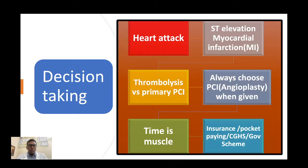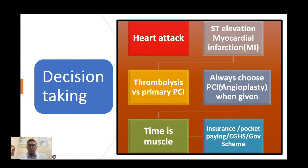Next comes what we should do — the decision making. First, whether you are having a heart attack or not. Second, whether it is an ST elevation MI — meaning the artery is totally occluded, confirmed by a particular ECG pattern. Then the question arises: thrombolysis or primary PCI? Wherever possible, if the PCI — angioplasty — option is available, you should always choose it. Primary angioplasty gives the best outcome for the patient.